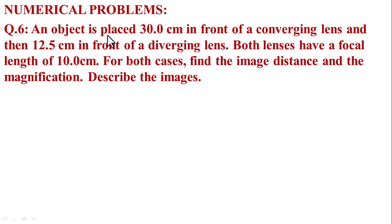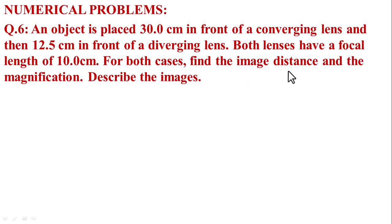An object is placed 30 cm in front of a converging lens, and then 12.5 cm in front of a diverging lens. Both lenses have a focal length of 10 cm. For both cases, find the image distance and also magnification, and describe the image. First of all, write the given data.